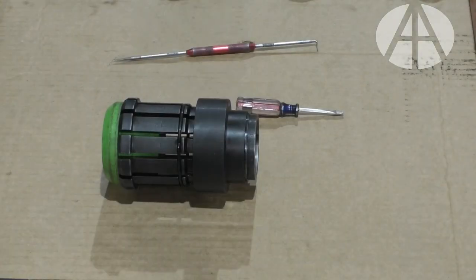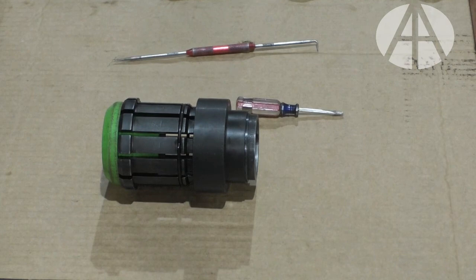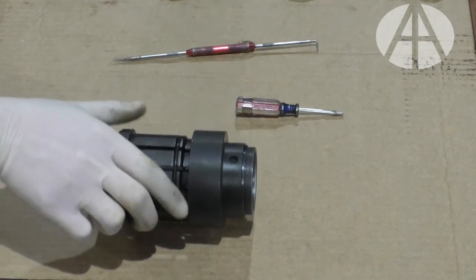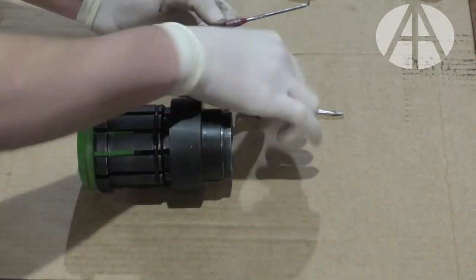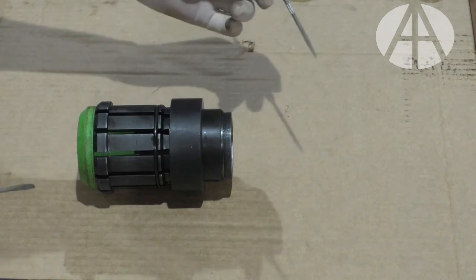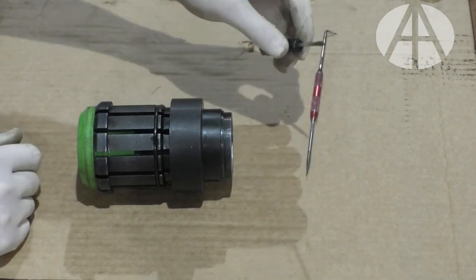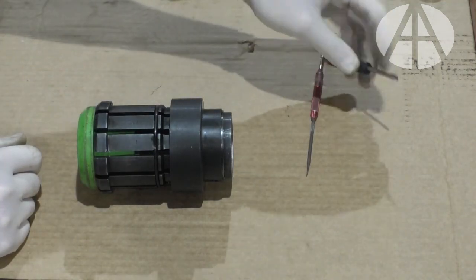This video is regarding disassembly and reassembly of Acumen's quick-release valve seat puller head. This is a four series head, so a couple of tools you're going to need is some type of pick and a flat head screwdriver, a smaller headed one.